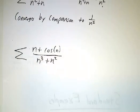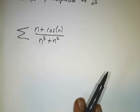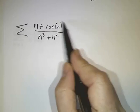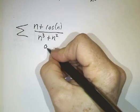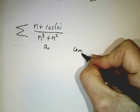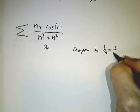What about this example? n plus cosine of n over n squared plus n. This is starting to look a little bit ugly. You've got this extra cosine of n upstairs. You've got this extra n squared downstairs. So here's where you use the limit comparison test. Let's call this a_n. And we can compare to, let's say, b_n, which is 1 over n squared.